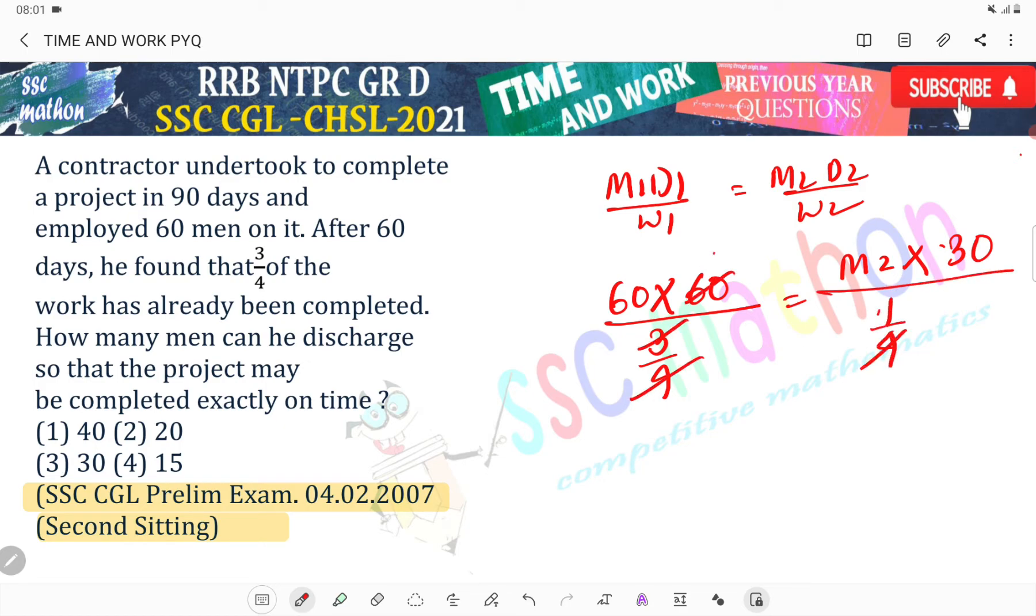Substituting and simplifying the equation, M2 equals 40. Therefore, 60 minus 40 equals 20 men can be discharged.